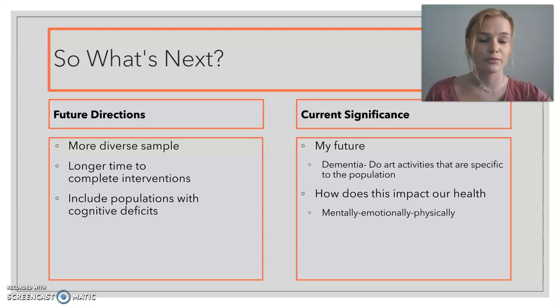So, what's next for this research? Well, in the future, I would use a more diverse sample. I would try to get people of a wider age range in my research because I would then be able to generalize my results to the general population since I only use college students between the ages of 18 and 22.